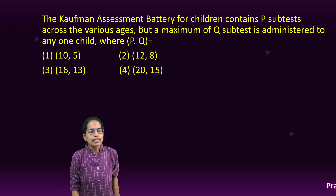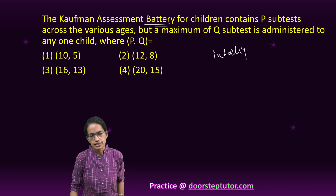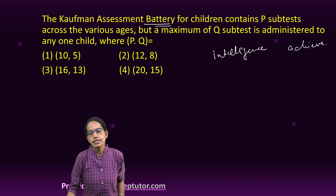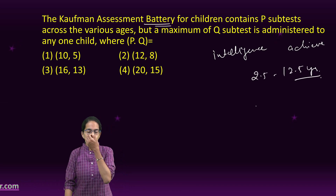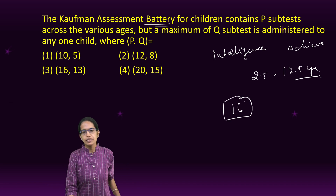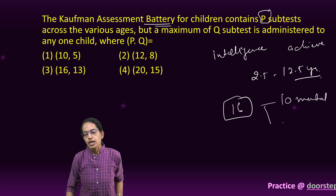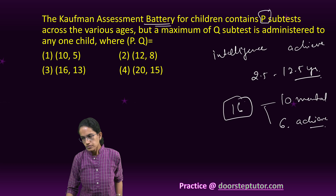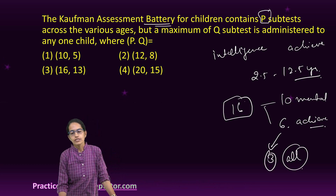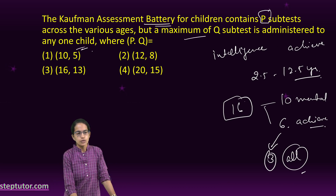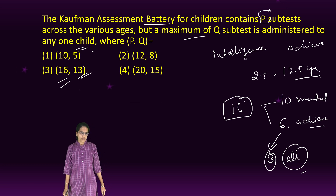The Kaufman Assessment Battery is a very important psychological test which is meant for assessing intelligence as well as achievement, and it is for the age group of 2.5 to 12.5 years. There are 16 subtests, of which 10 deal with mental processing and 6 deal with achievement. Of these 6, only 3 can be administered to all age groups, so the number that can be administered to one child would be 13. So 16 and 13 becomes the right option for this question.